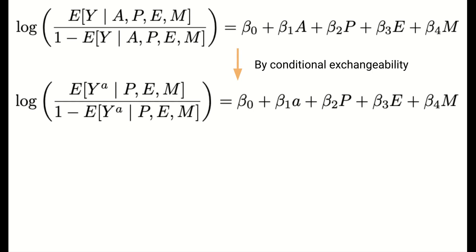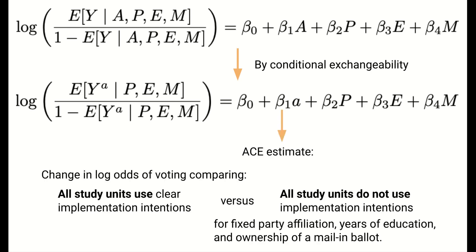Note that by conditional exchangeability, this model can be equivalently written as shown in the second line. This motivates a more intervention-oriented interpretation of the treatment coefficient. The estimated beta 1 coefficient for treatment is an estimate of the average causal effect. It's the change in log odds of voting if all study units were to use clear implementation intentions, as compared to all study units did not use implementation intentions, when holding fixed party affiliation, years of education, and ownership of a mail-in ballot.